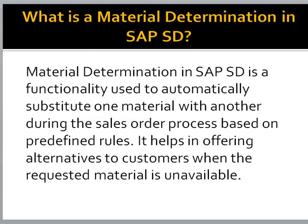What is material determination in SAP SD? Material determination in SAP SD is a functionality used to automatically substitute one material with another during the sales order process based on predefined rules. It helps in offering alternatives to customers when the requested material is unavailable.